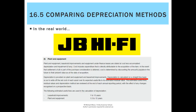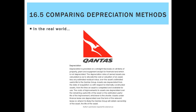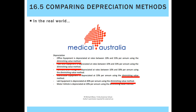In the real world, different companies use different methods. JB Hi-Fi uses straight-line for their buildings, plant, and equipment. Catapult, which makes forklifts, uses reducing balance because forklifts become less efficient as they age. Qantas uses straight-line for property, plant, and equipment. Medical Australia uses diminishing value — what we call reducing balance — for lab equipment and motor vehicles. Each business chooses based on the revenue-generating capacity of the asset.